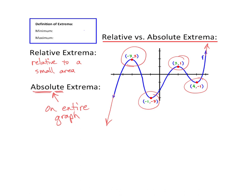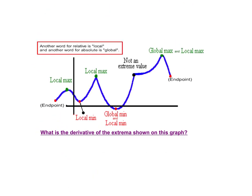Up here on Definitions of Extrema: Minimum is the lowest value, Maximum is the highest value. They can ask these in lots of different ways. Sometimes they'll say what is the point — then you give the X and the Y. Sometimes they say what is the value of the Absolute Extrema — then you just give the Y value. Sometimes they say where does it occur — and you give the X value. So you have to read the question very carefully to figure out should you give X, Y, or the entire point.